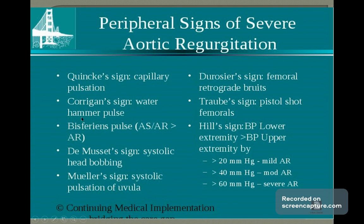There is Quincke's sign — the capillary pulsation in the nail bed, with very quick inflow and outflow when you apply pressure. Corrigan's pulse — also called the water-hammer pulse — is demonstrated by placing your finger on the pulse for volume and then abruptly raising the limb, which causes very high volume on your palpating fingers. This is called the water-hammer pulse, or collapsing pulse.